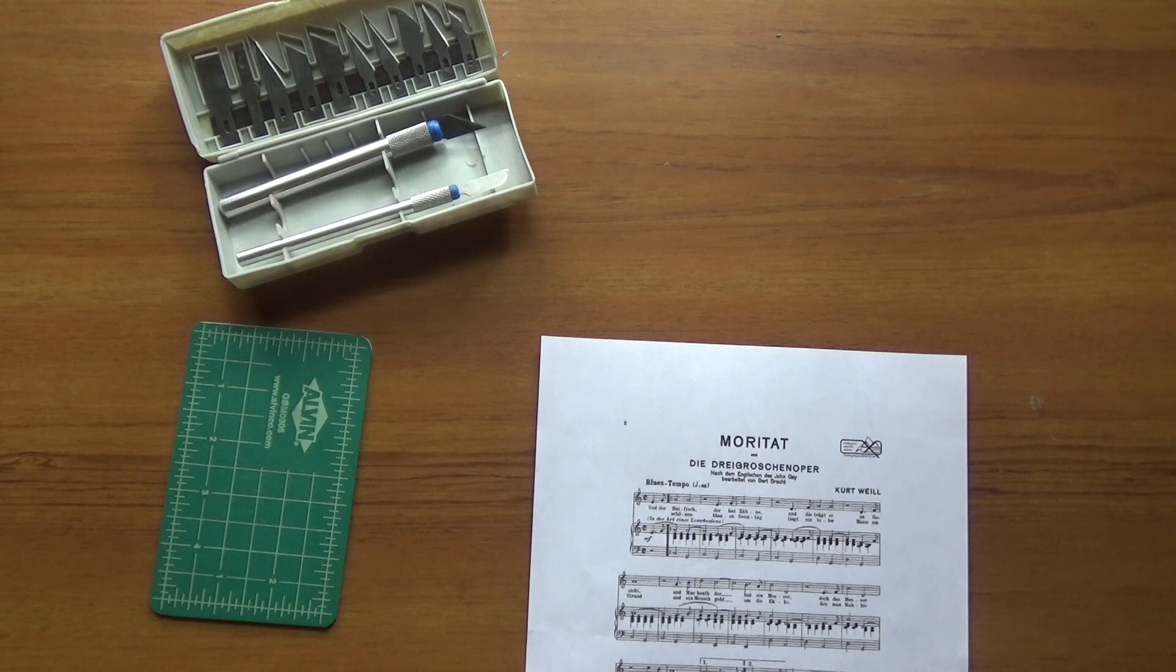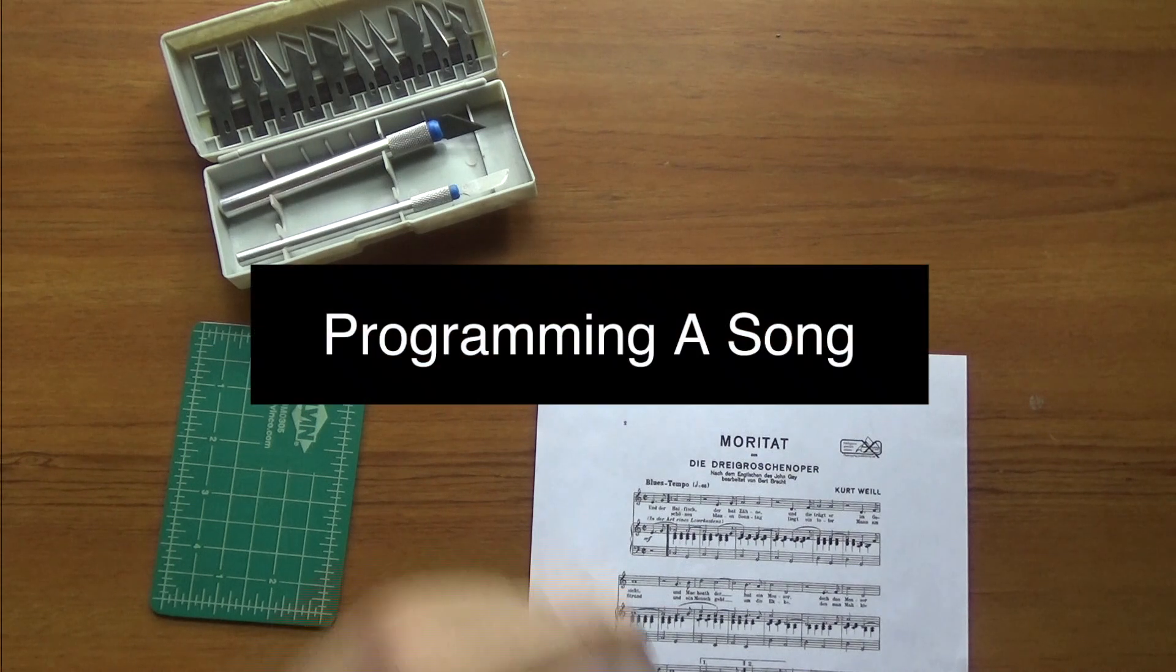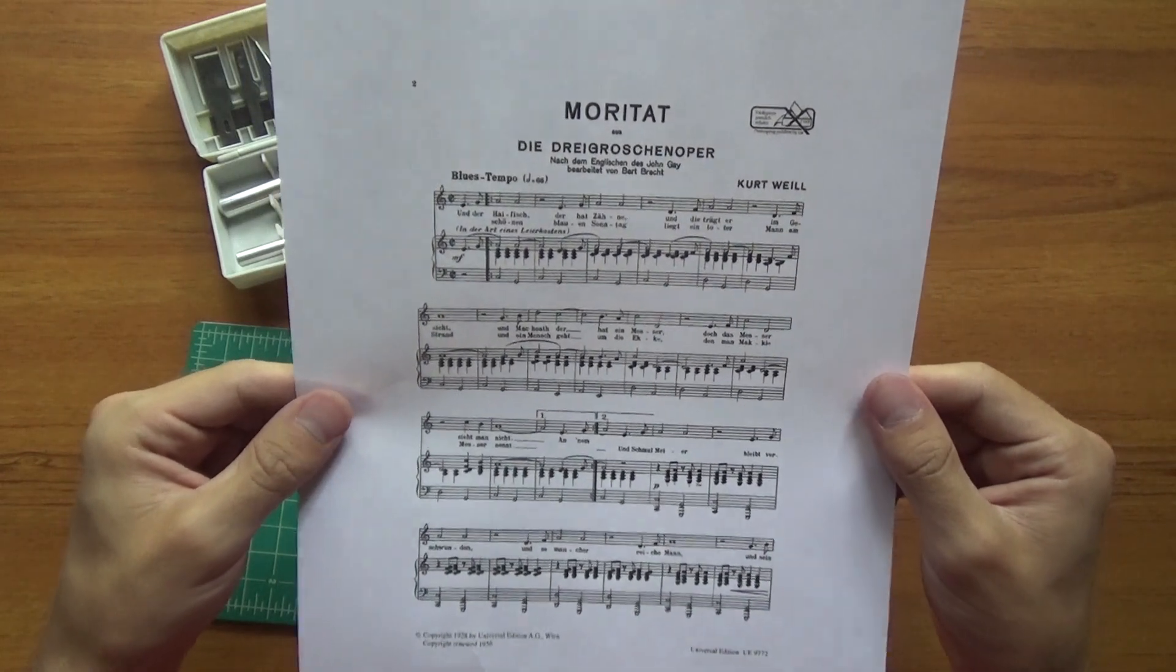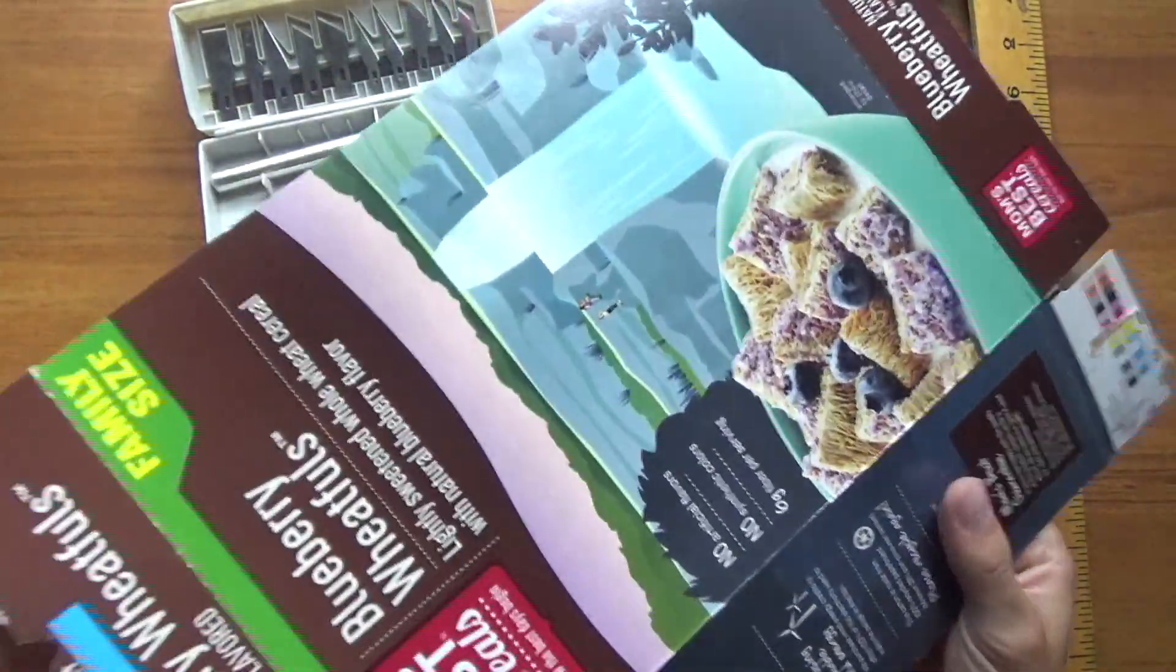Okay, so now we know how the machine works. This is how I make punch cards for it. Today we're going to make the punch card for Mack the Knife. First, I cut my cereal boxes to size.